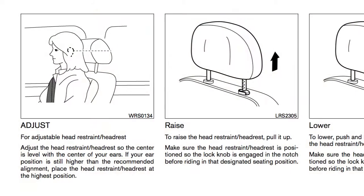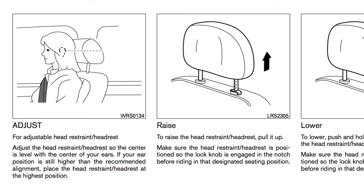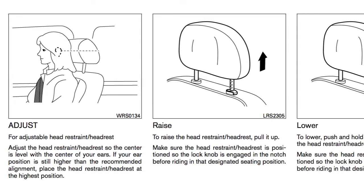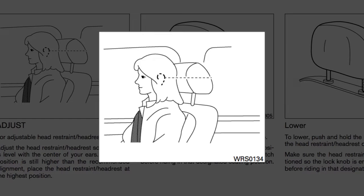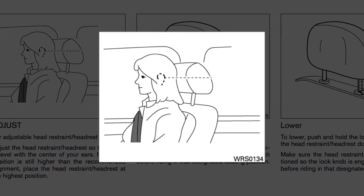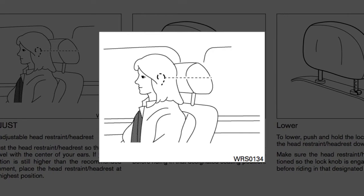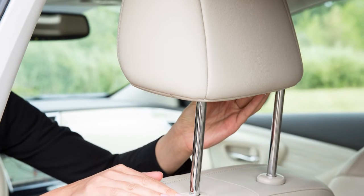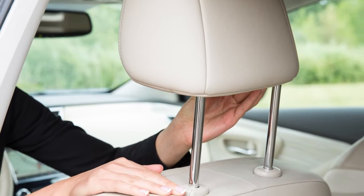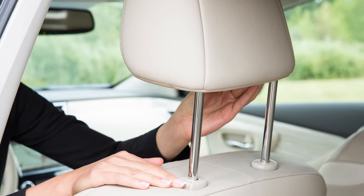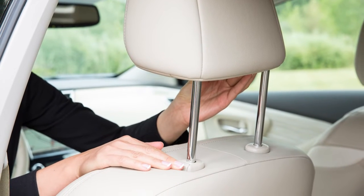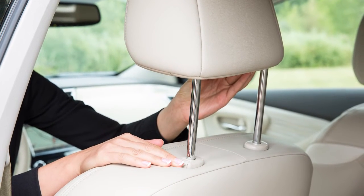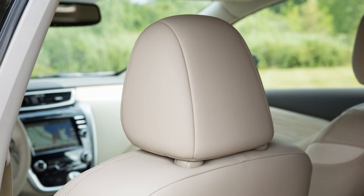To properly align adjustable head restraints and/or headrests, place the head restraint and/or headrest so its center is in line with the center of the ear. If your ear position is still higher than the recommended alignment, place the head restraint and/or headrest at the highest position.